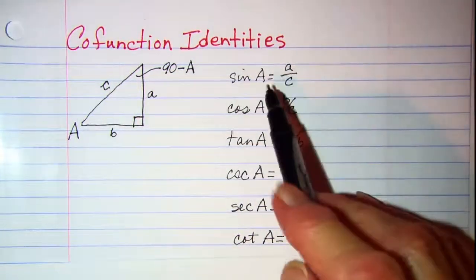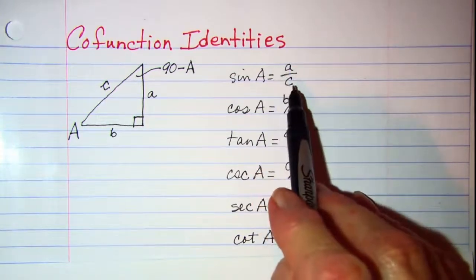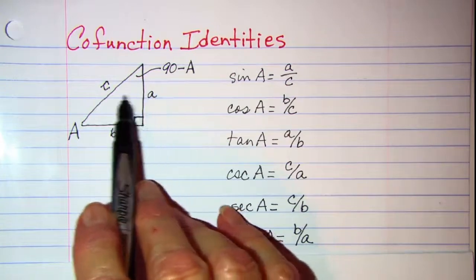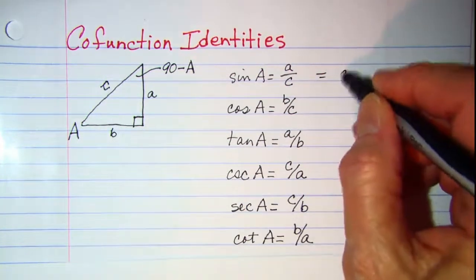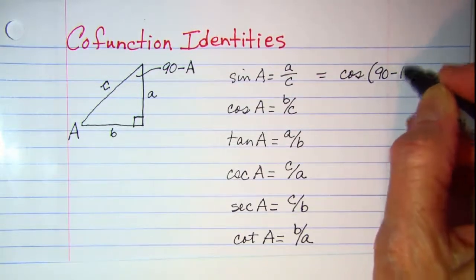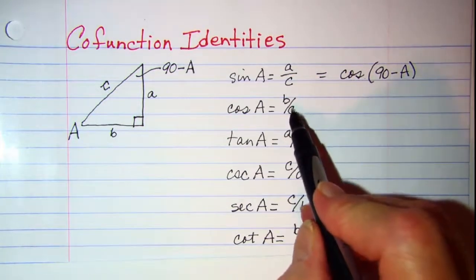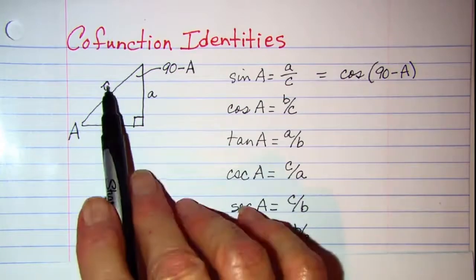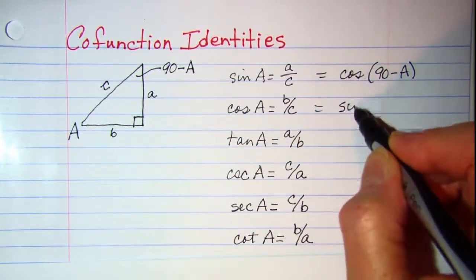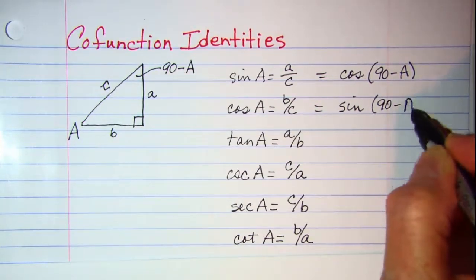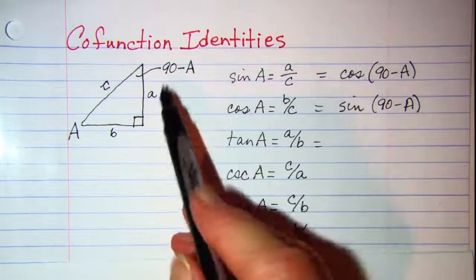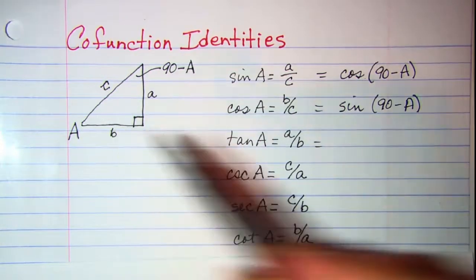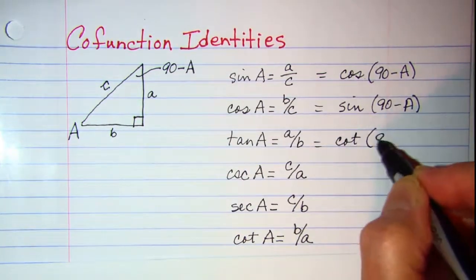Now I want you to notice this: the ratio A over C — in terms of the 90 minus A angle — is the cosine. So this is cosine of 90 minus A. The ratio B over C, in terms of 90 minus A, is opposite over hypotenuse, so that is the sine of 90 minus A. And in terms of the 90 minus A angle, A over B is adjacent over opposite, so that is the cotangent of 90 minus A.